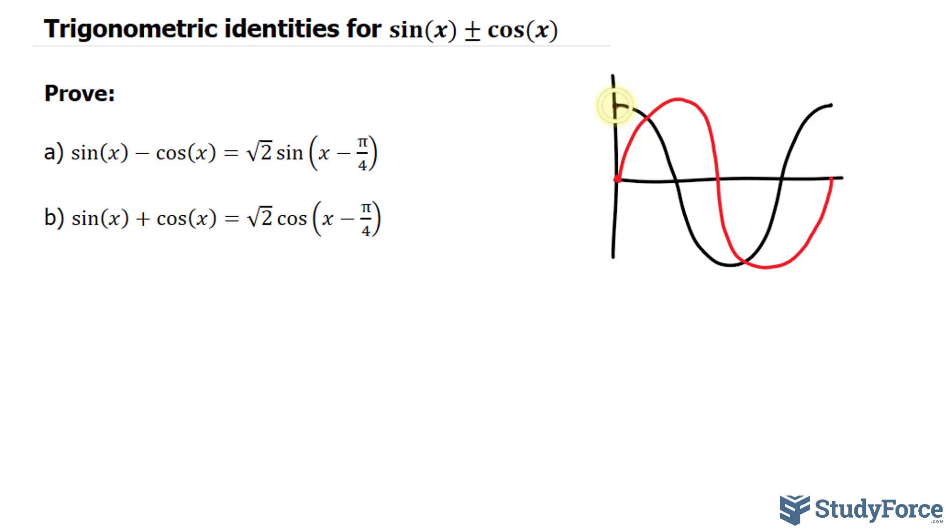Now, to make cosine into sine, we have to shift the cosine curve π over 2 to the right. And to show that, we say cos(x) is equal to sin(π/2 - x).